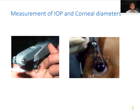The Perkins tonometer — which has the same applanation tip as the Goldman applanation tonometer but is mounted on a mobile device — is typically used to check intraocular pressure in children. A tono-pen can also be used. Vernier calipers are used to measure the corneal diameter horizontally and vertically; the normal diameter is about 10 to 11 millimeters. A diameter of more than 14 millimeters confirms buphthalmos or congenital glaucoma.